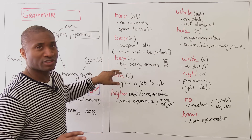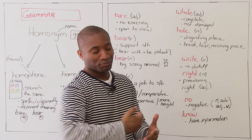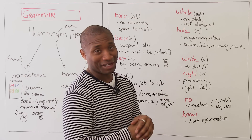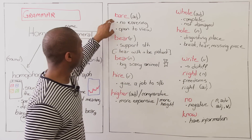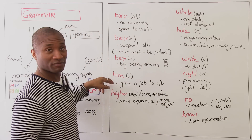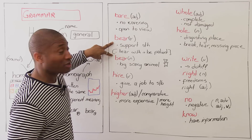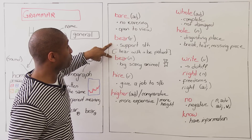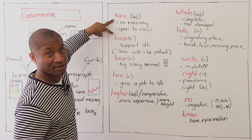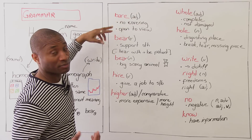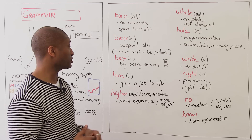'Bear' here is that big scary animal, or the teddy bear in your house — it's a noun. So you have to be careful. As a homograph, it can have two meanings. As a homophone, it can have two meanings. But the word is still the same. Bearing with the lesson? Let's continue.